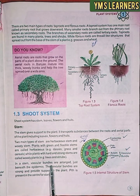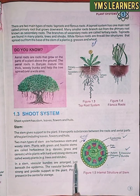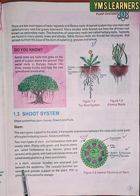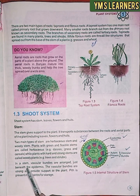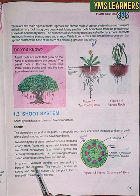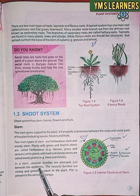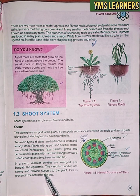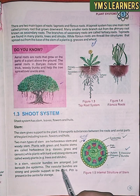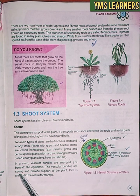The stem vascular bundles are arranged just beneath the epidermis. The epidermis is strong and provides support to the plant.